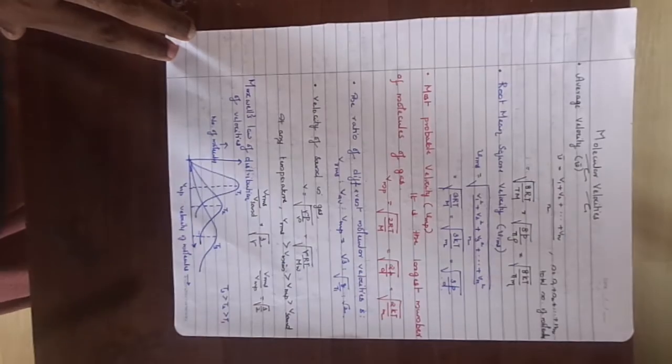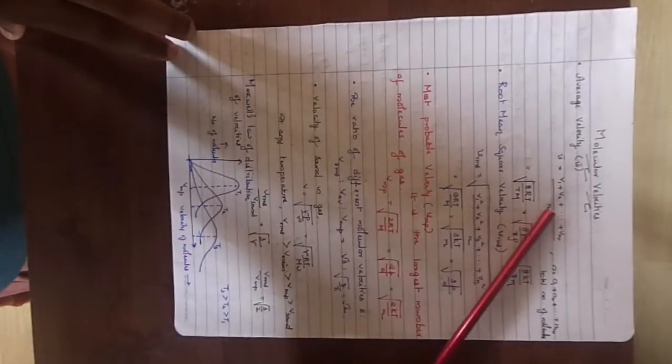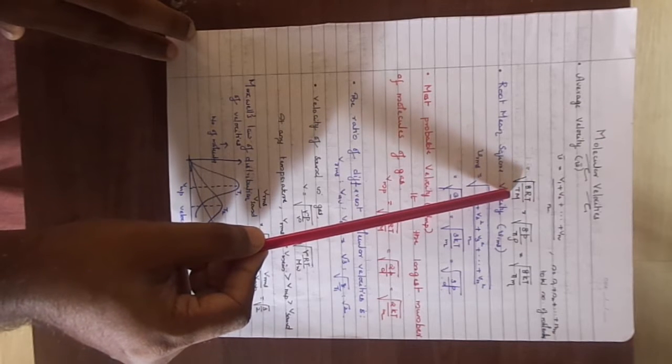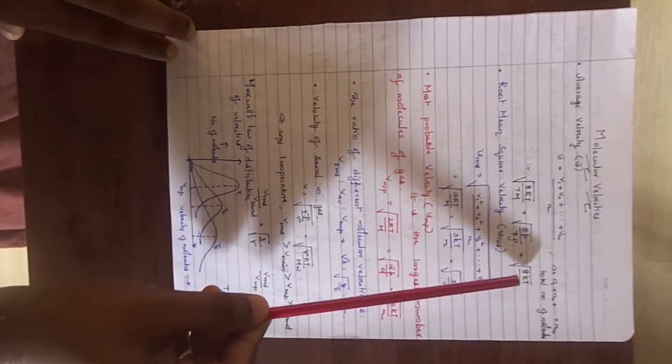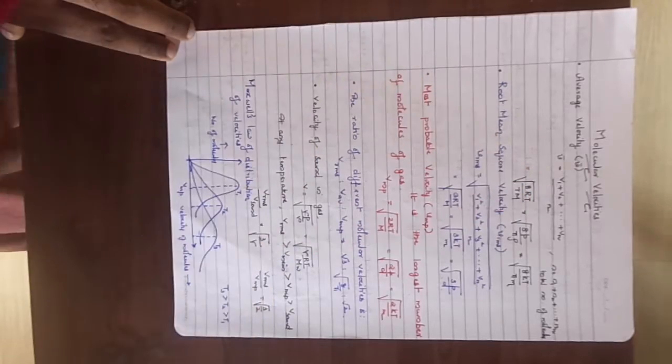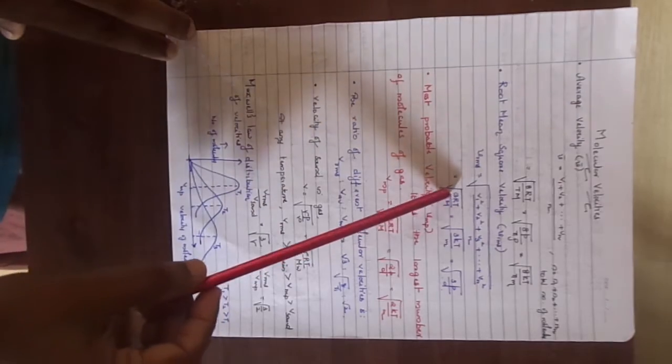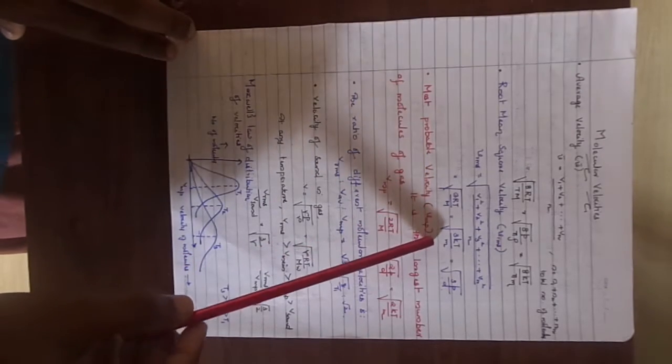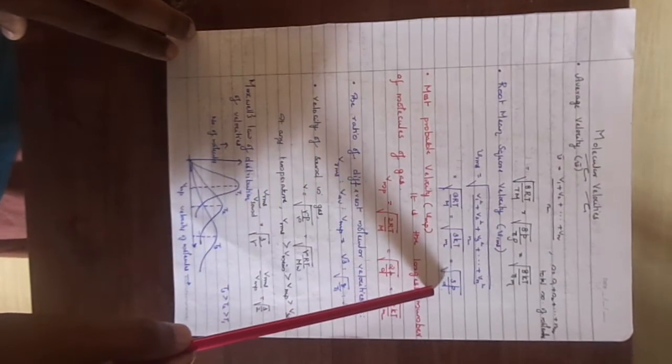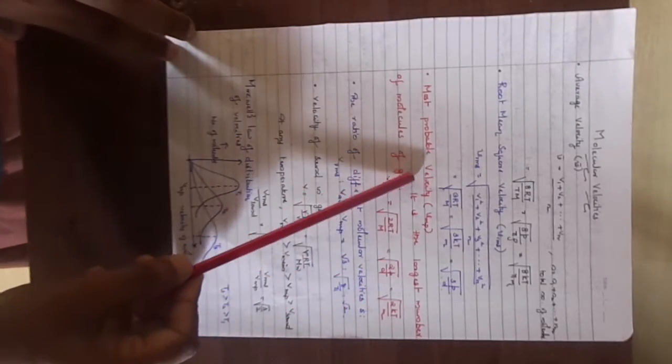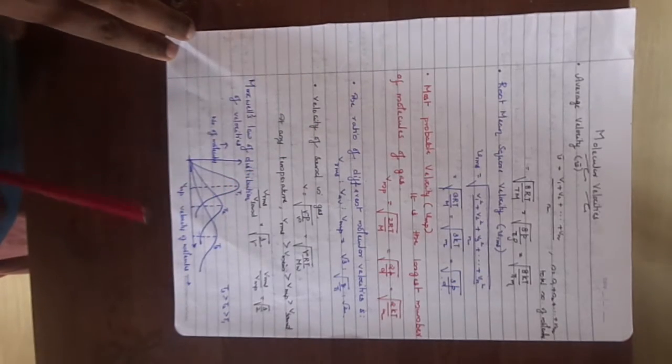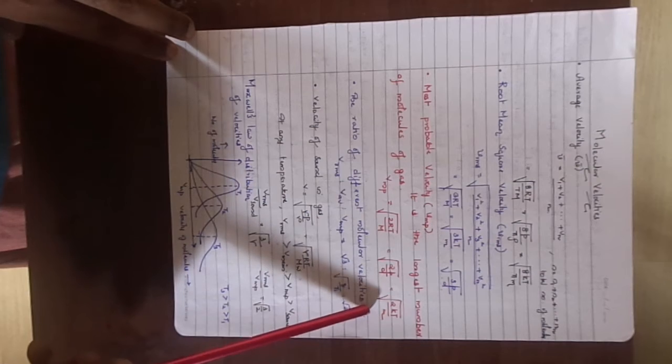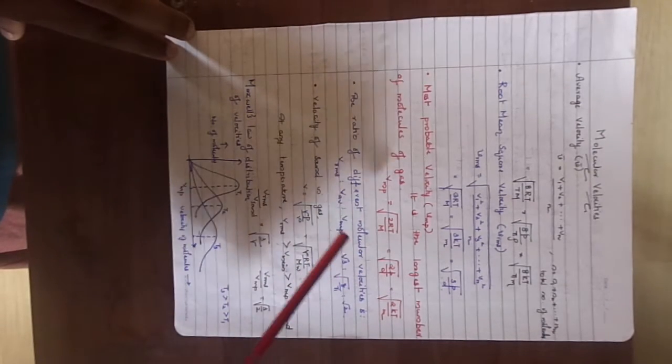Look, a very important concept. We can expect one question from this area. The molecular velocities. You know the average velocity, just take the average of individual velocities. Keep in mind the formulas: root of 8RT by pi M, root of 8P by pi rho, root of 8KT by pi m, the total mass. Here the molar mass. The root mean square velocity: you have to take the square root of the mean of the squares of individual velocities. It is equal to root of 3RT by capital M, or root of 3 small KT by m, or equal to root of 3P by the density.